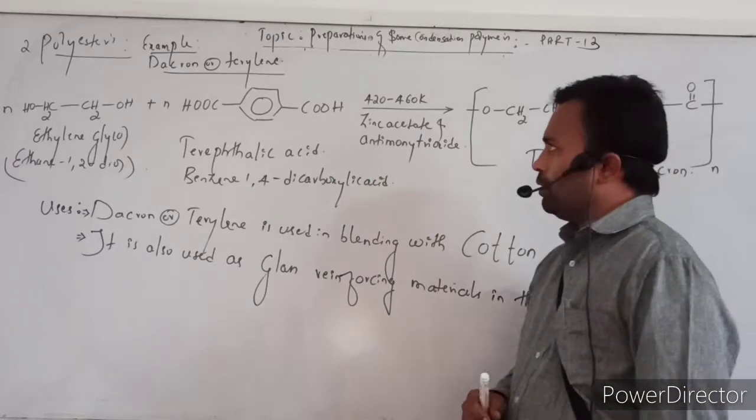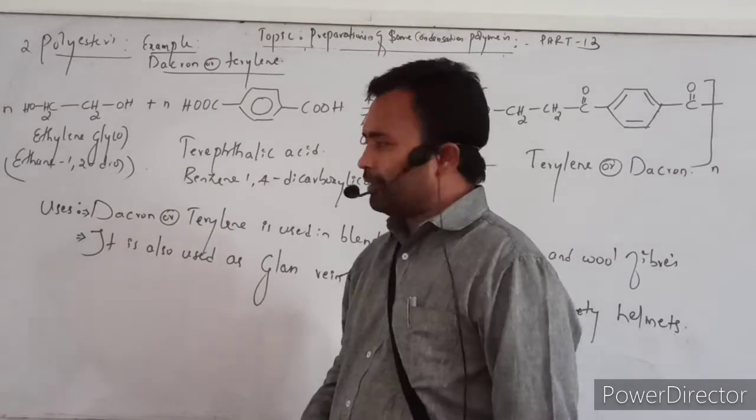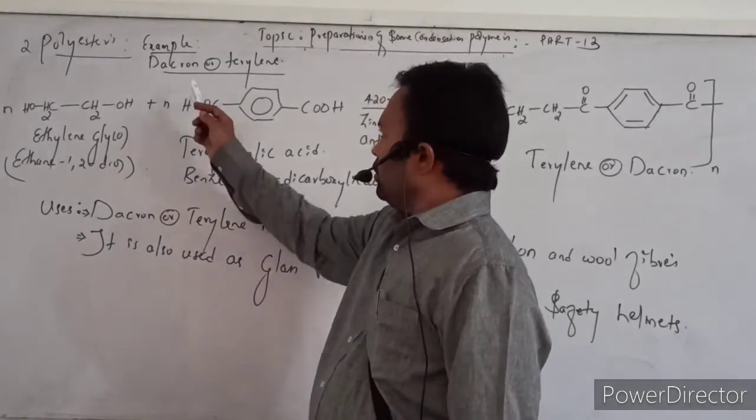In case of this polyester, let me give an example that is Dacron, or it is also called Terylene. This Dacron or Terylene is manufactured by using monomers called ethylene glycol.